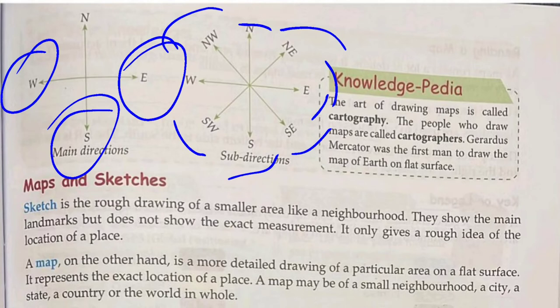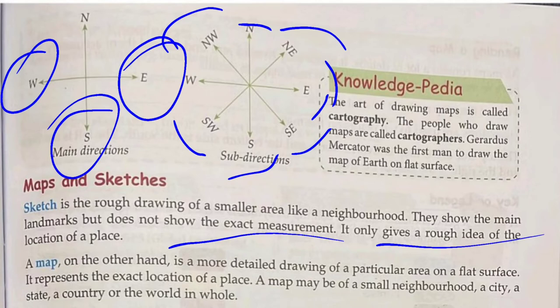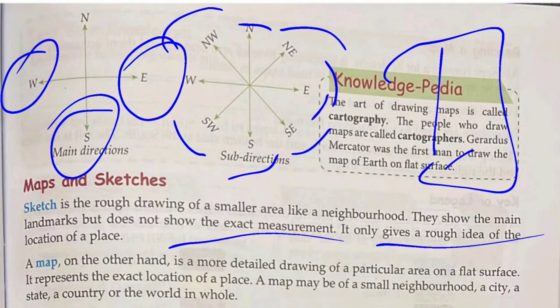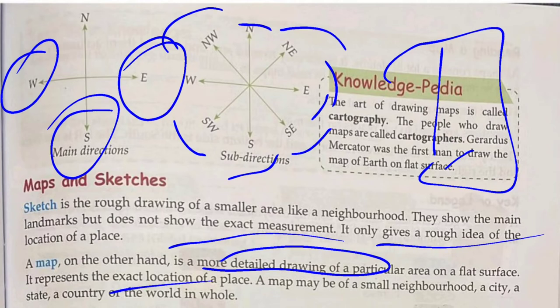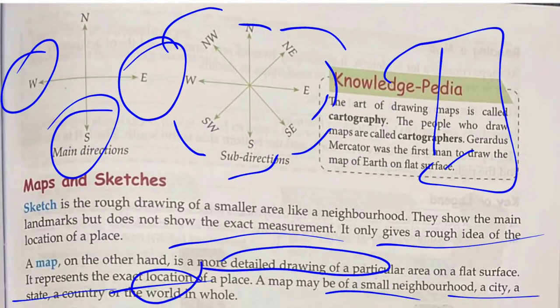Maps and Sketches: A sketch is a rough drawing of a smaller area, like our neighborhood park. Sketches show the main landmarks but do not show exact measurements — they only give a rough idea of the location of a place, such as a small neighborhood, a city, a state, or a country.